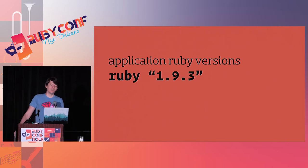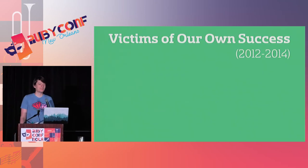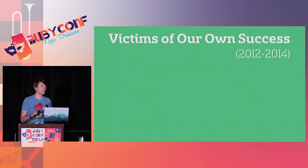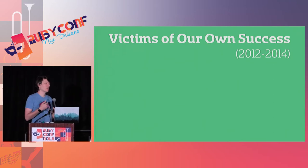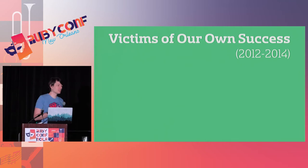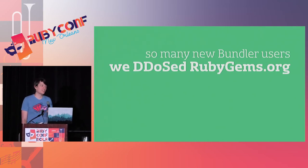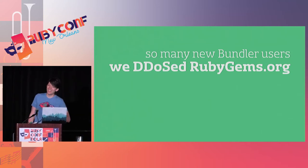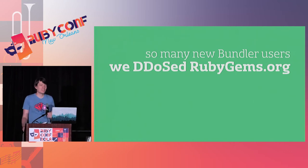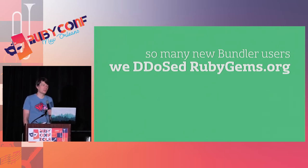This feature wound up causing some problems, but I'll have to talk about that later. Moving on to the next section: the biggest thing that happened in 2012 to 2014 is that Bundler adoption really, really took off. Bundler 1.0 in 2010 averaged about 8,000 downloads per day. Bundler 1.1 came out a couple years later and averaged 20,000 downloads per day. By August of 2012 it was averaging 30,000 downloads per day — and that's when we discovered that we had executed a distributed denial of service attack against rubygems.org.